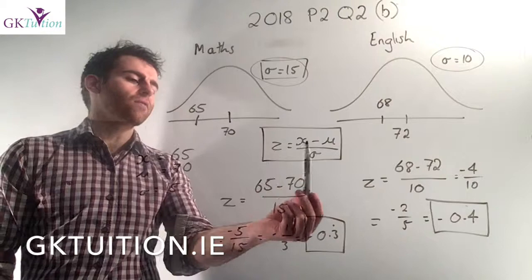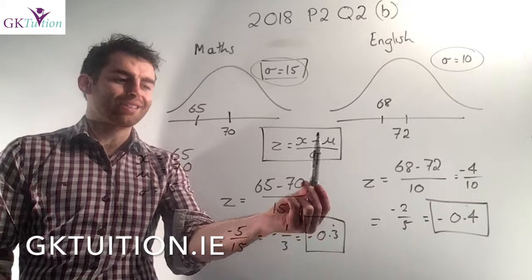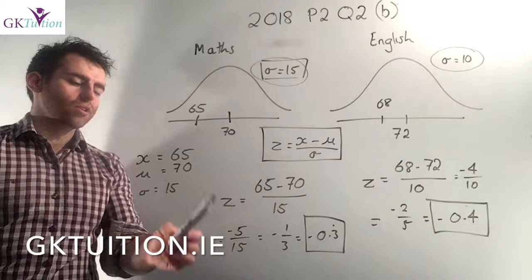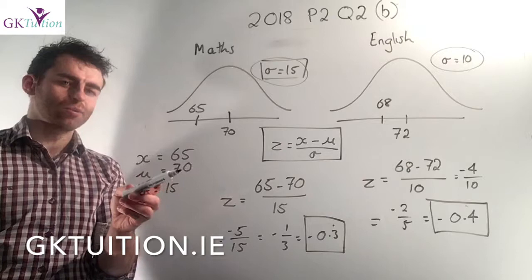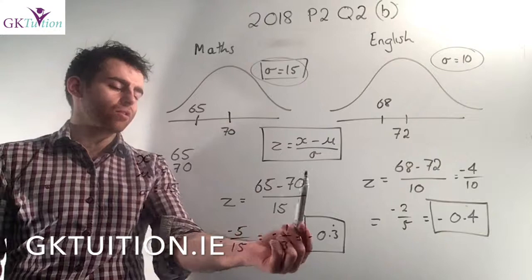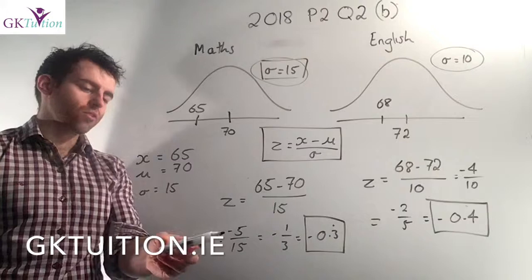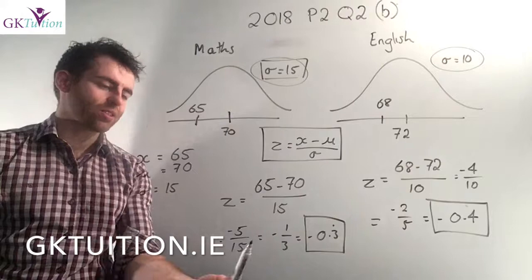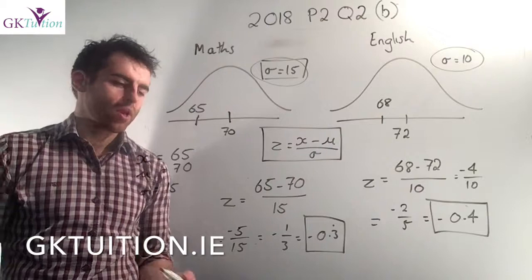In the standardizing formula, x represents Mary's result, μ represents the average result, and σ represents the standard deviation. In the maths test, Mary's result was 65, the average was 70, and the standard deviation was 15. So to get her z-score: (65 − 70) / 15, which works out as −5/15.